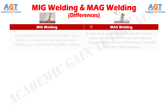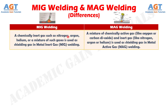Difference number one: a chemically inert gas such as nitrogen, argon, helium, or a mixture of such gases is used as shielding gas in metal inert gas welding or MIG welding. Whereas, a mixture of a chemically active gas like oxygen or carbon dioxide and an inert gas like nitrogen, argon, or helium is used as shielding gas in metal active gas welding or MAG welding.